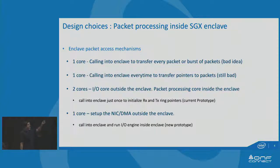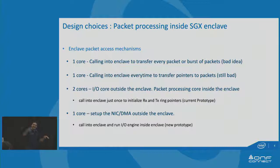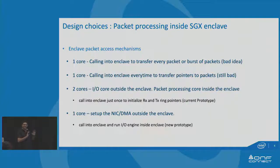The third solution — which we have some prototypes running on — is where you use two cores. You use one core to do the packet I/O, and you keep one core inside the enclave, so you don't have to enter or exit every time. Both cores are running and doing their own job. You set up a lockless queue between them, and nobody has to exit or enter.